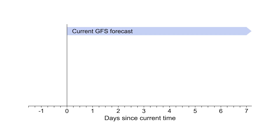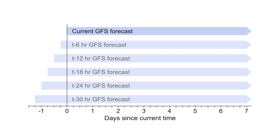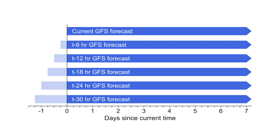To calculate the probability of a rapid-onset event, the GFS quantitative precipitation forecasts from the current and five previous runs are used as input data for the National Water Model Ensemble. Only QPF beginning with the current water model issuance time is used to generate the six-member ensemble.